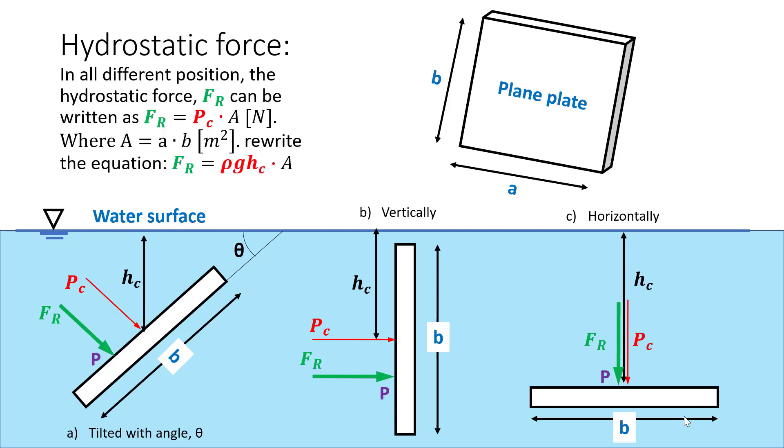Next, let us look at hydrostatic force, FR. FR is acting below the average pressure Pc. FR can be defined as FR equal to Pc times A, where A is the area of the plane plate, where A equal to A times B. By rewriting, the equation will get FR equal to ρghc times A. In all three positions, the same equation is used in order to find the hydrostatic force.